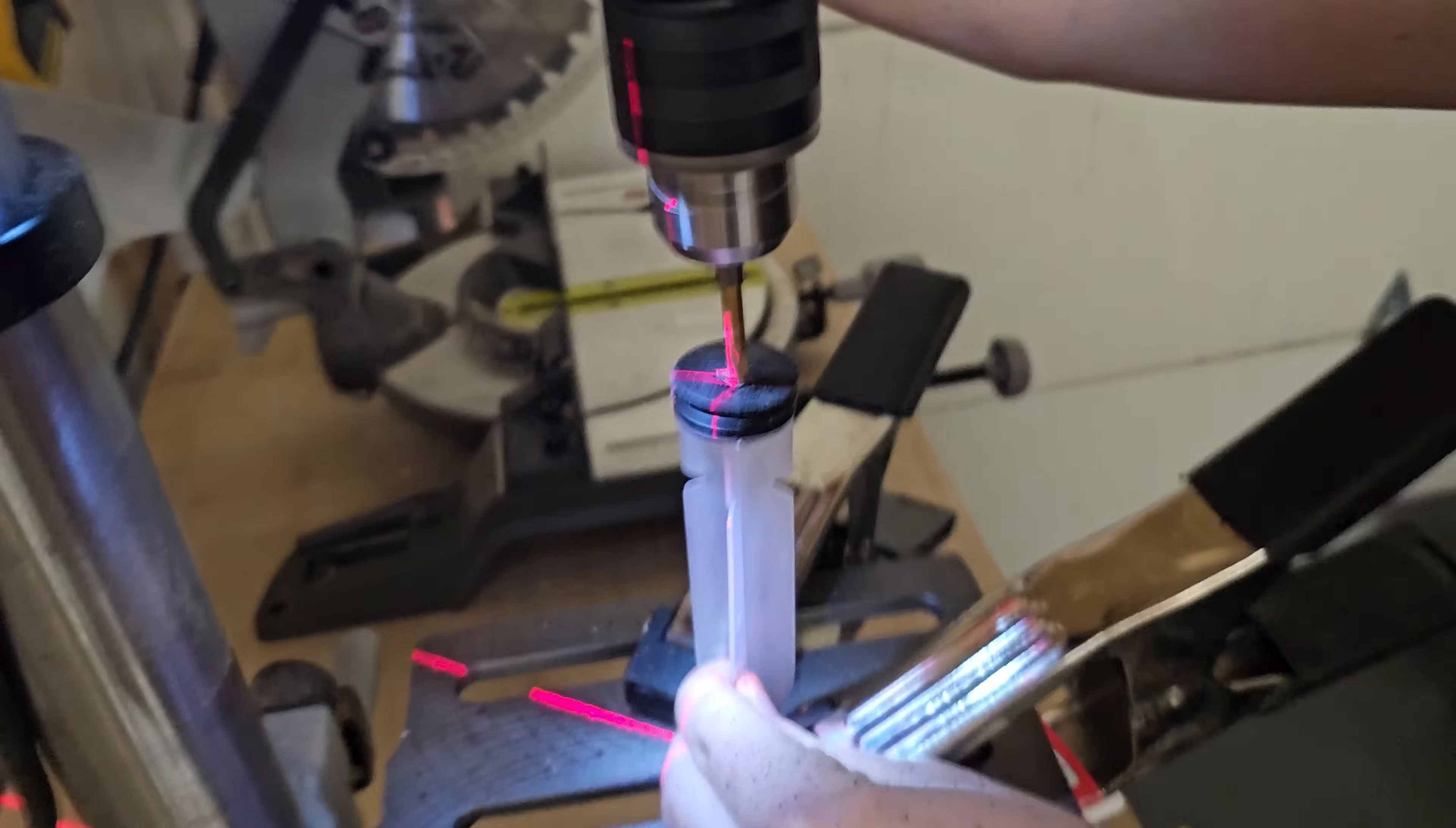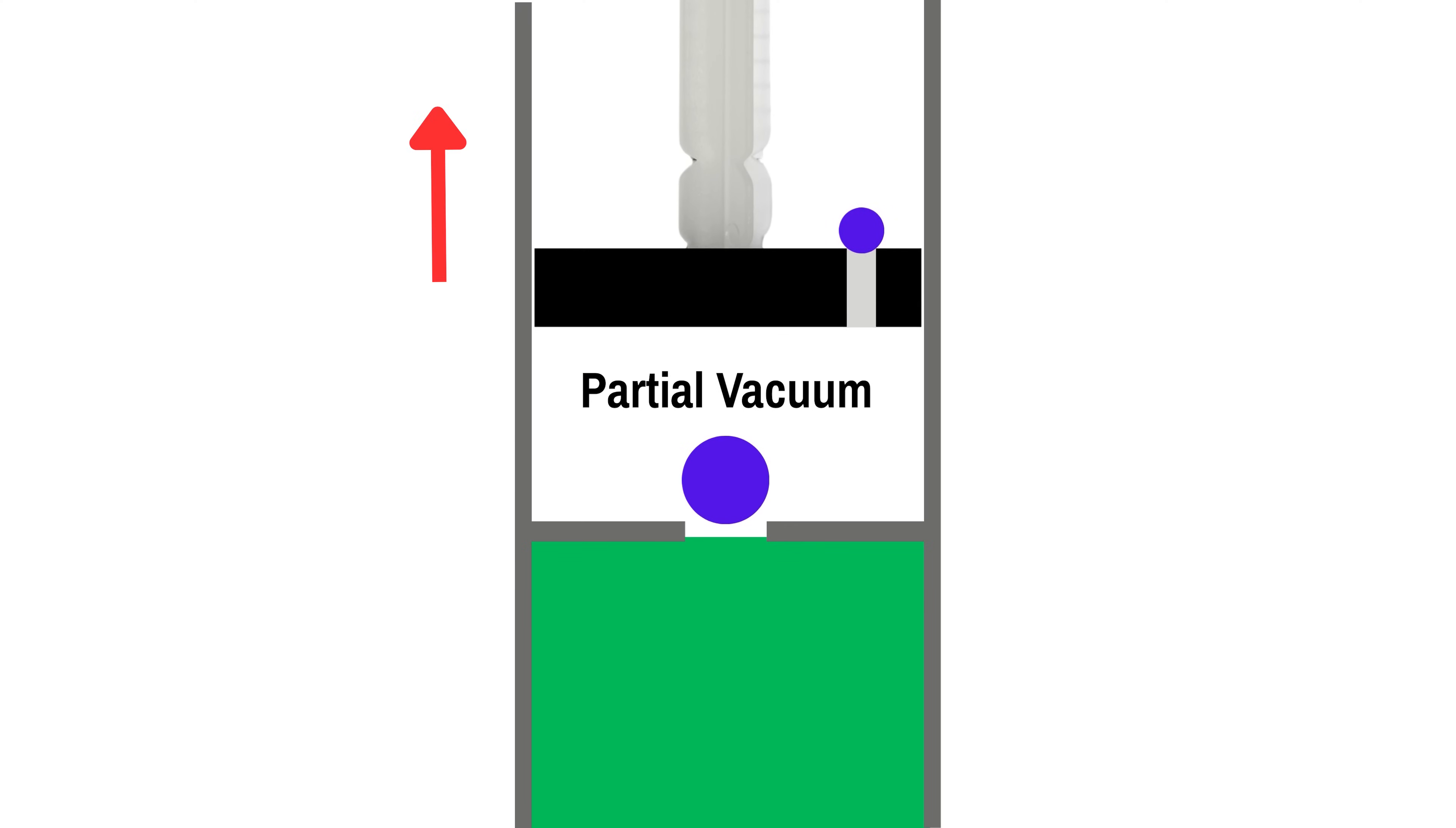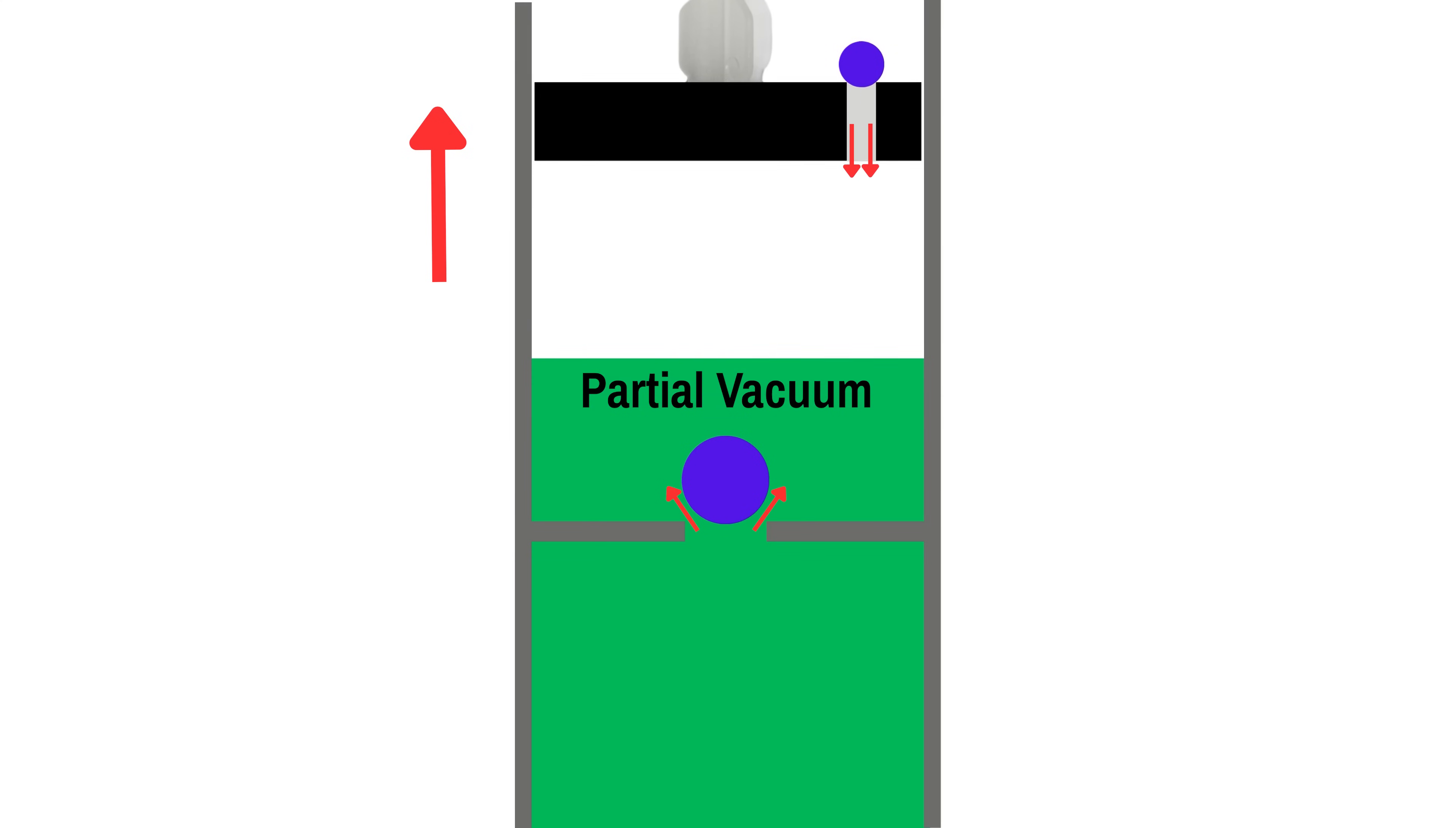If I drill a hole in the syringe and by some miracle make a good enough seal using a hot glue gun, now you can see exactly how the dispenser works. Pulling on the syringe still allows liquid to get sucked in, but also pulls on the top valve, keeping that valve closed.